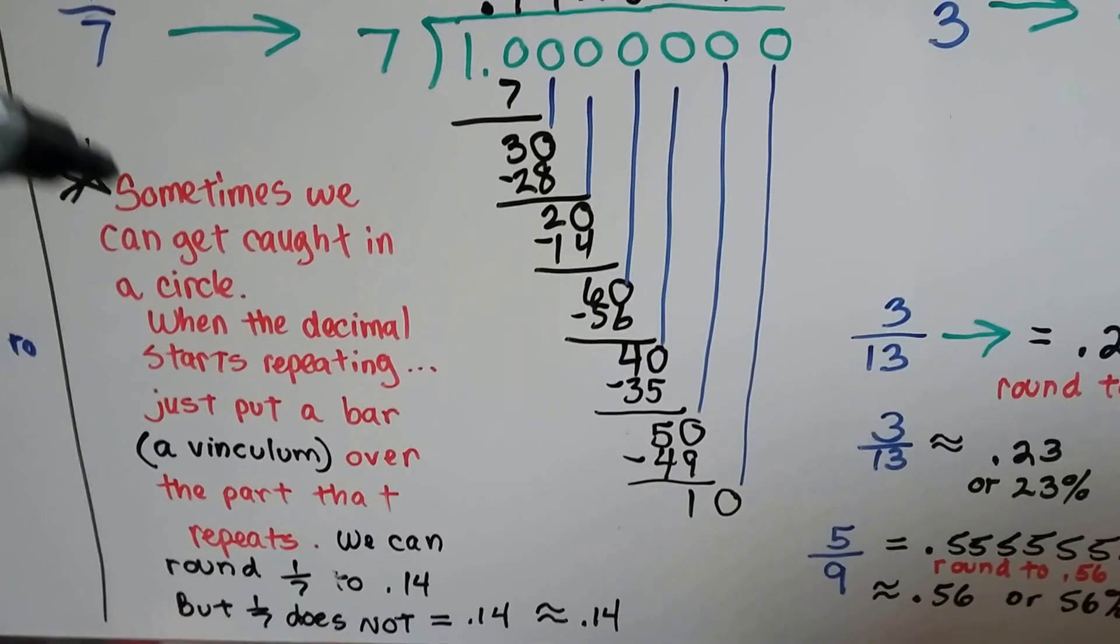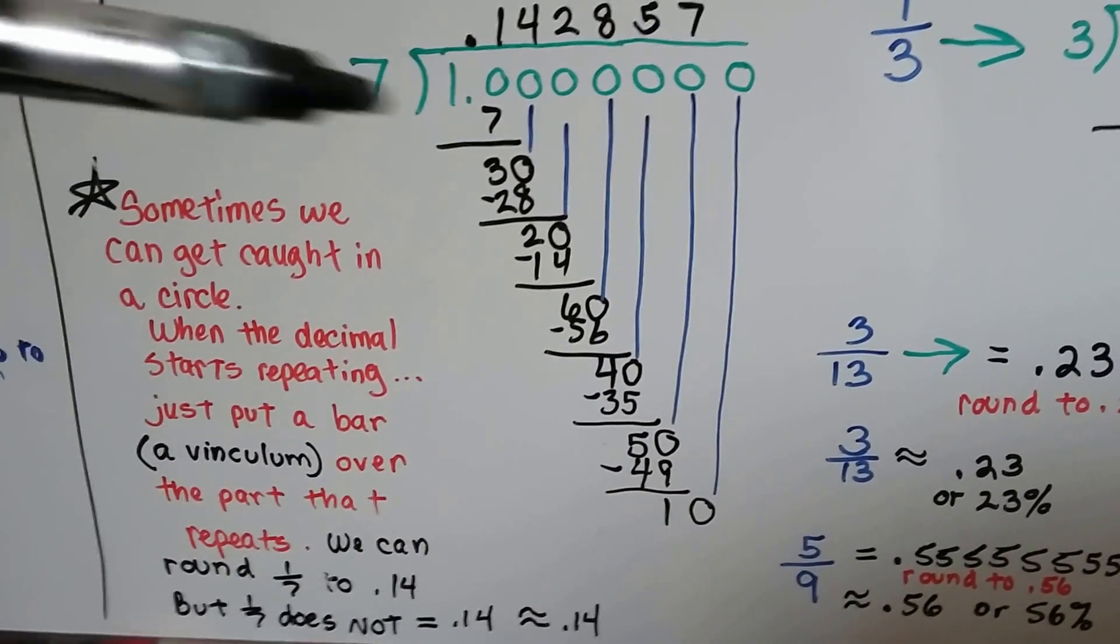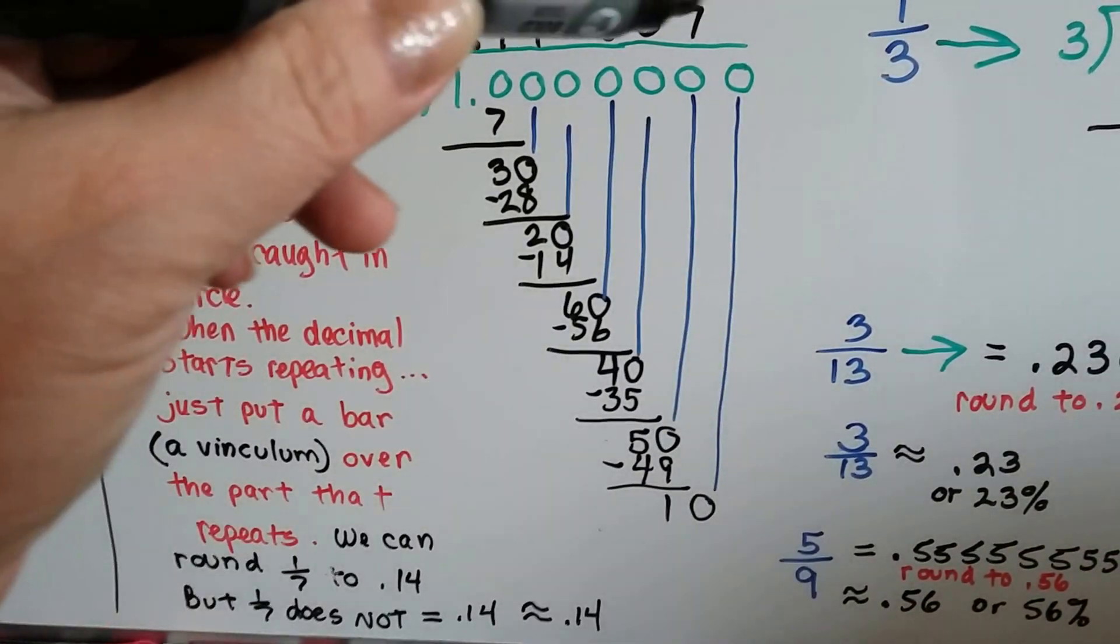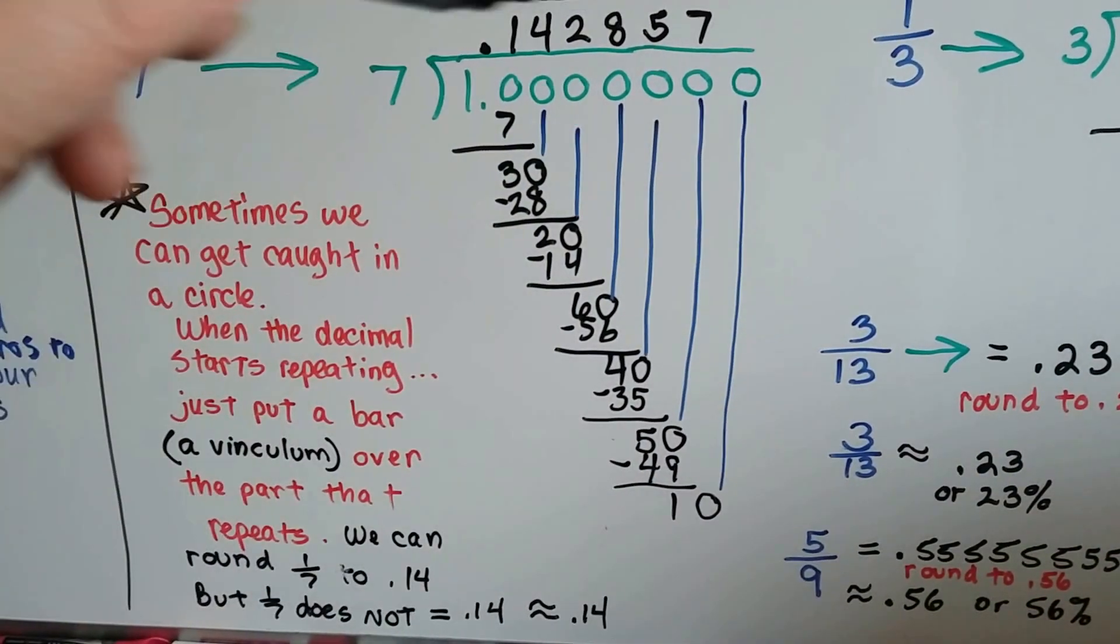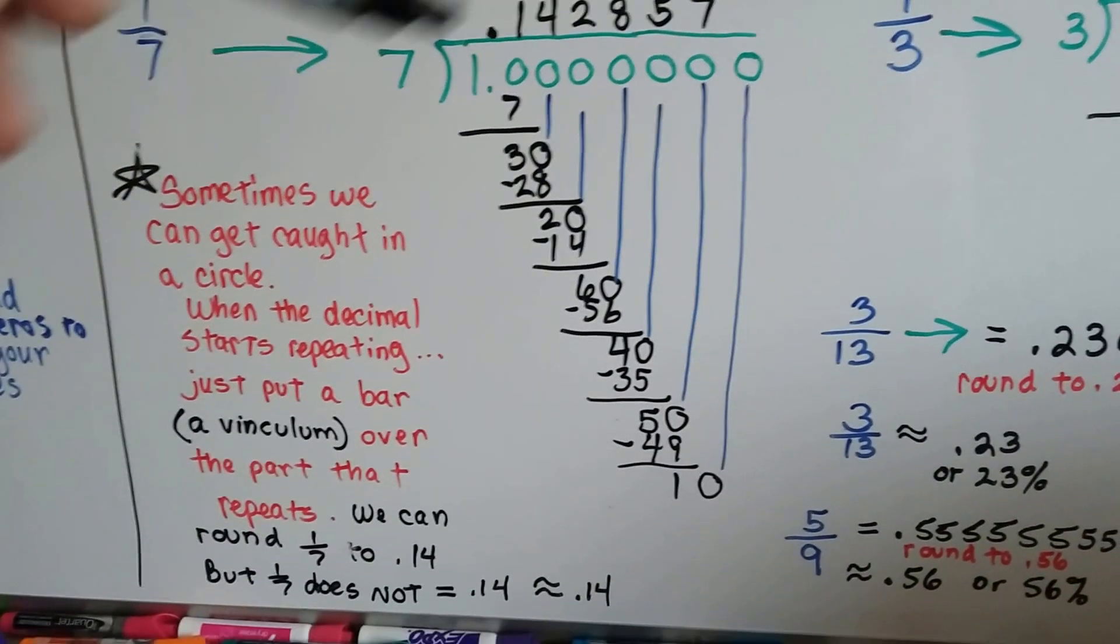So, sometimes we can get caught in a circle. When the decimal starts repeating, it's called a non-terminating decimal. We just put a bar over the top of the numbers that are repeating. It's called a vinculum. We put it over the part that repeats.